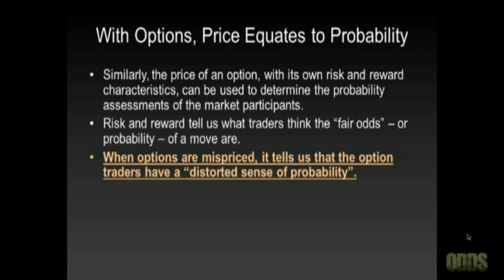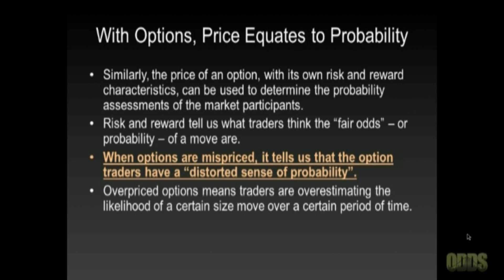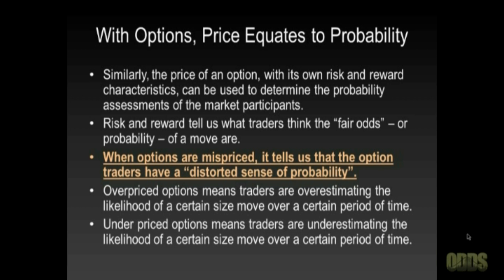When options are mispriced, it tells us that the option traders have a distorted sense of probability. Overpriced options means traders are overestimating the likelihood of a certain size move over a certain time period. Underpriced options means traders are underestimating the likelihood of a certain size move over a certain period of time.